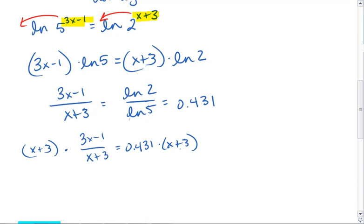That gives 3x minus 1 equals 0.431x plus 1.293.